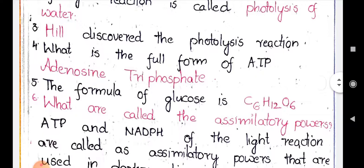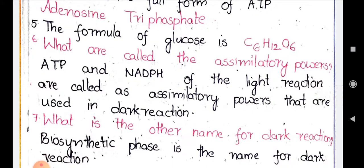The sixth question: 'What are called the assimilatory powers?' ATP and NADPH of the light reaction are called assimilatory powers. At the end of the light reaction, ATP and NADPH are formed as end products, and these are used in the dark reaction for production of glucose — reacting with carbon dioxide to finally produce the glucose molecule.